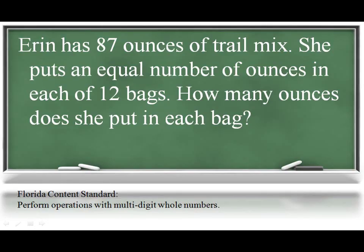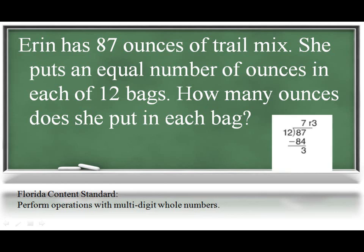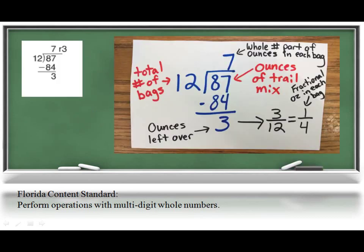Students will be exposed to problem solving situations that require them to understand what the numbers mean in order to correctly answer the question. Being able to label the numbers in their work is important in order for the students to show comprehension of the problem scenario. For example, in the problem shown, labeling their values in their work and understanding that the remainder shows a fraction of the next whole group will help students to correctly answer the problem as 7 and 1 fourth of an ounce in each bag, as opposed to incorrectly answering 7 remainder 3, which does not make sense in the context of this question.